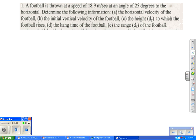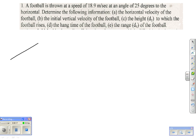Alright, these are the additional problems to practice - that is your projectile review. The first one is a football, and it's thrown at a speed of 18.9 meters per second at an angle of 25 degrees to the horizontal. So what it's telling us is it's throwing like this, 18.9 meters per second at a 25 degree angle.